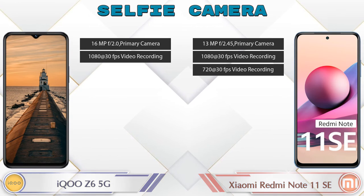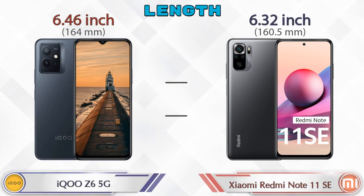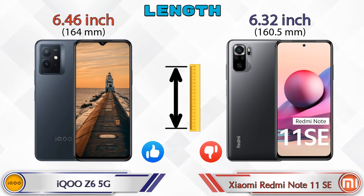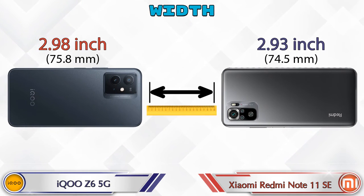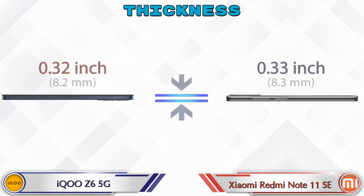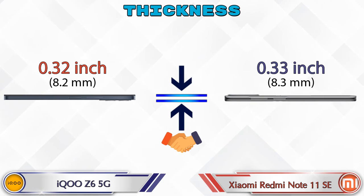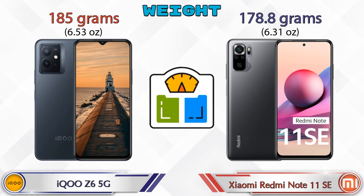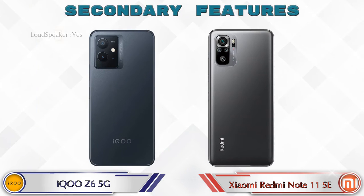Now let's check dimensions. Length: iQOO Z6 5G is 6.46 inches and Redmi Note 11 SE is 6.32 inches, which is less. Width: iQOO Z6 5G is 2.98 inches and Redmi Note 11 SE is 2.93 inches, also less. Thickness: iQOO Z6 5G is 0.32 inches and Redmi Note 11 SE is 0.33 inches, which is almost similar. Weight: iQOO Z6 5G is 185 grams and Redmi Note 11 SE is 178.8 grams.